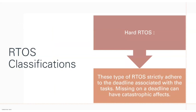Let us move on to the most important part of this video: the classification of RTOS. RTOS can be classified into three categories — hard real-time operating system, firm real-time operating system, and soft real-time operating system. In a hard real-time operating system, the deadline is very critical. If any task misses the deadline, something very serious will happen — the term used is catastrophic effect.